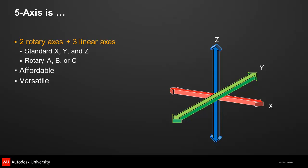According to the ISO standard, the A axis rotates around X, the B axis rotates around Y, and the C axis rotates around Z. You need to be aware that some machine builders use their own naming conventions that may be different, but the principle is the same.